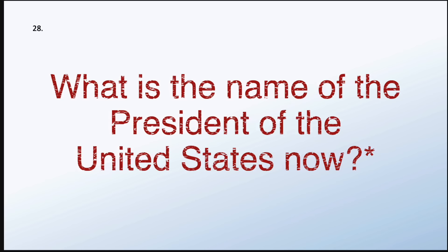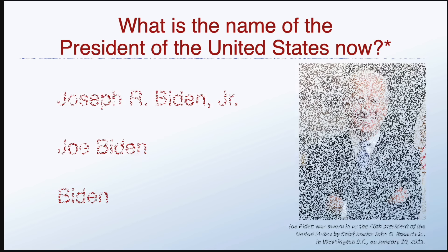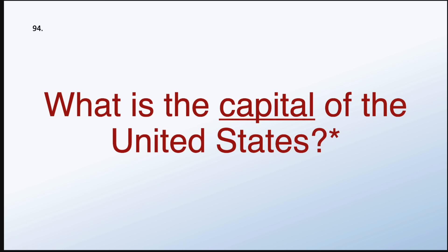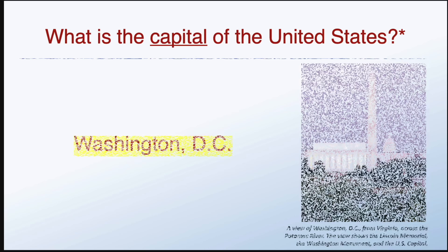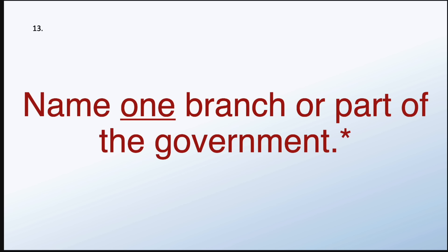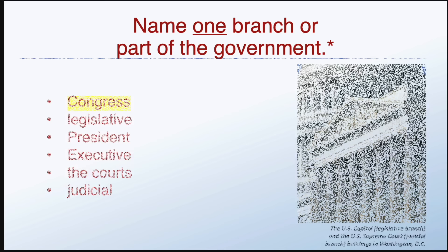What is one right or freedom from the First Amendment? What is the name of the president of the United States now? Joe Biden. What is the capital of the United States? Washington, D.C. Name one branch or part of the government. Congress.